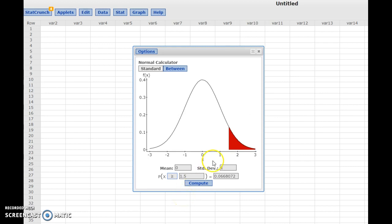The area to the right of 1.5 on the standard normal curve with mean 0 and standard deviation 1 is provided here. The area is 0.066.